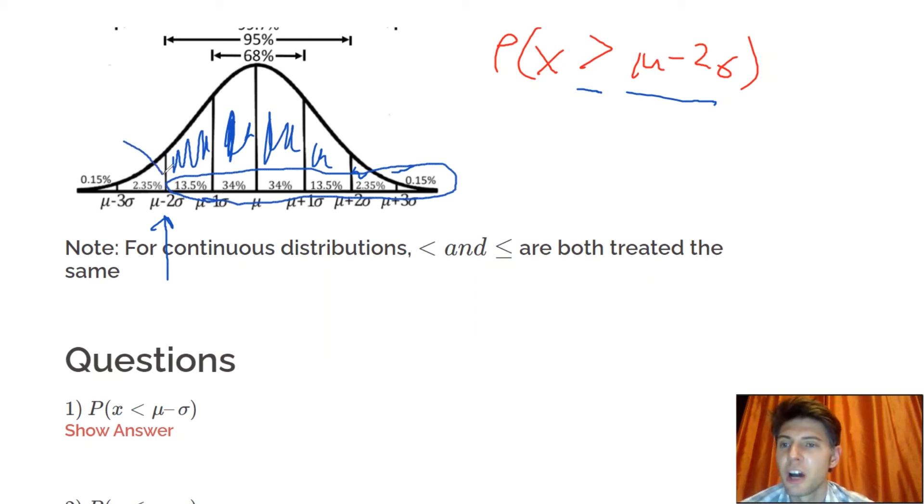Or as a shortcut, we can just do 100 minus these two, because all these numbers add up to 100 because it's 100%. Either we can add up these six numbers, or we can just do 100 minus 0.15 minus 2.35. I'm going to do the shorter one. That gives me 97.5.